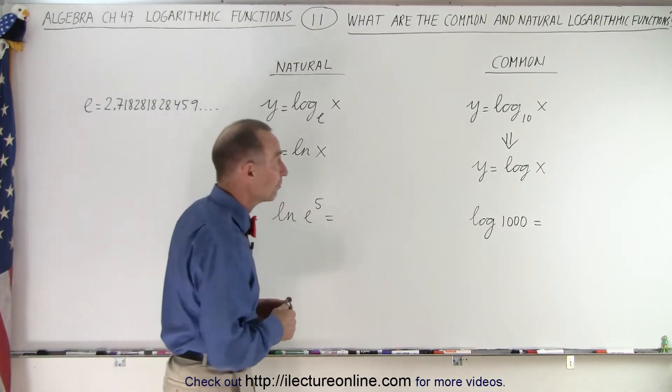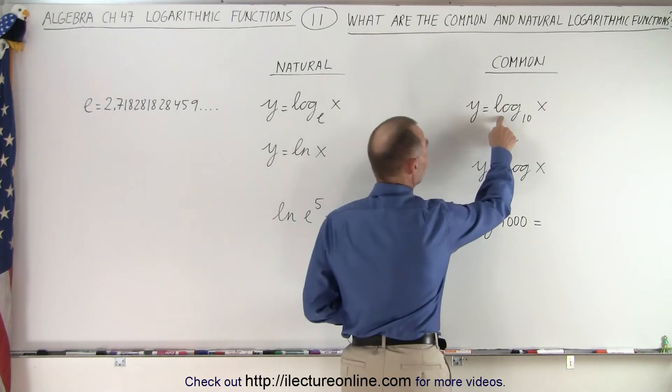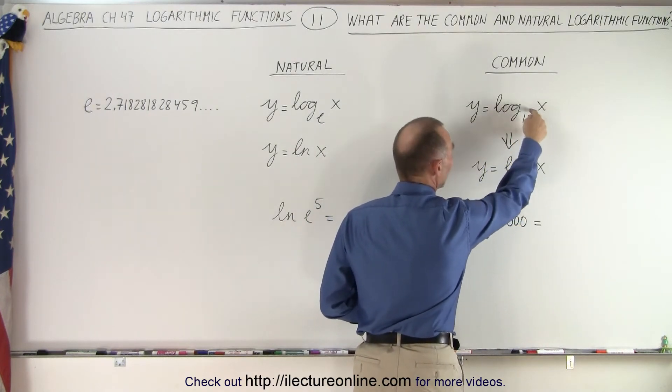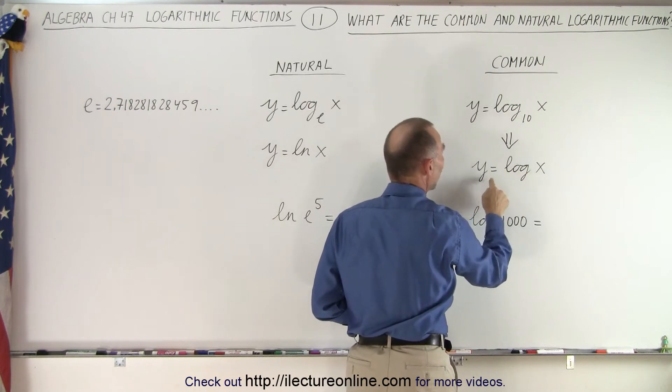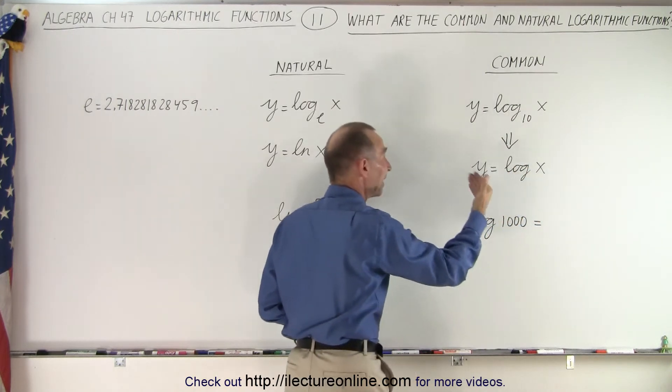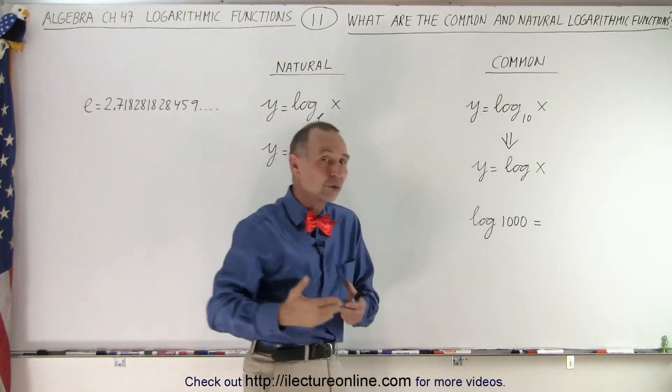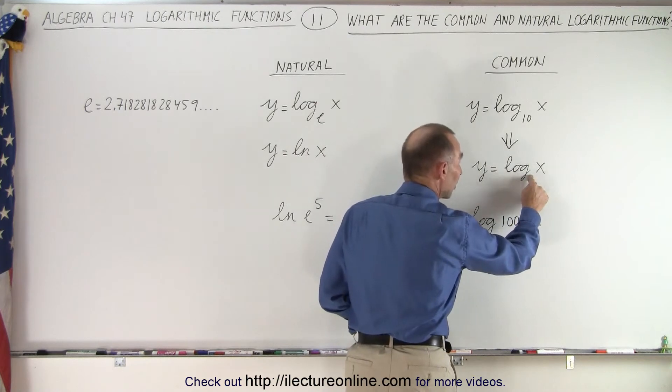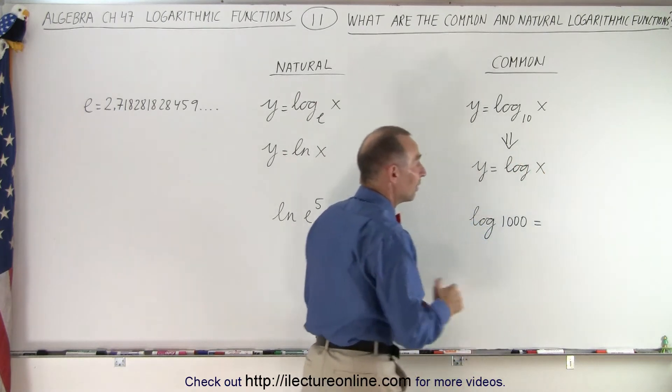The common logarithmic function is the logarithmic function with base 10. Instead of writing it like this, we simply omit the 10 and write it as y equals the log of x. So instead of writing y equals the log base 10 of x, y equals log of x means the exact same thing. If you don't see the base number here, we assume it's equal to 10.